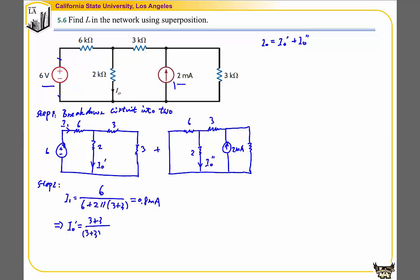Plus 2 times the overall current 0.8 mA, which gives us 0.6 mA. So this is the first part.